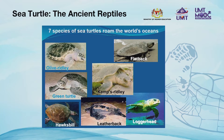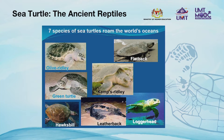Sea turtles have undergone a considerable reduction in their biodiversity since their peak in the Cretaceous period. Of the five marine turtle families of the Cretaceous, only two are represented among the present-day turtle fauna. Today, seven species of sea turtles representing two families are recognised. An eighth species, the black turtle or the East Pacific green turtle, is recognised by some biologists, but morphological, biochemical, and genetic data conflict with this view, and the black turtle is currently classified as belonging to Chelonia mydas.